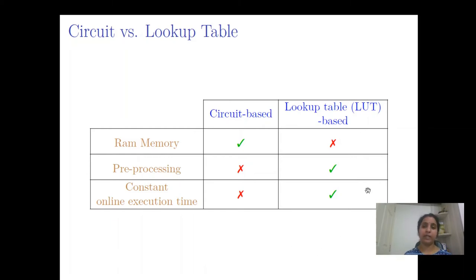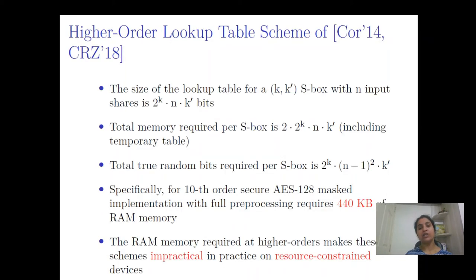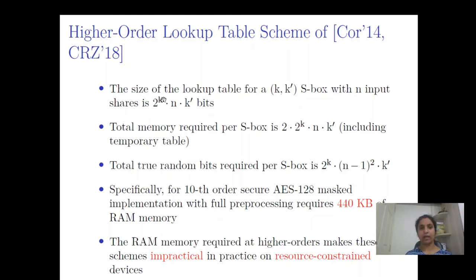The main problem with lookup table-based schemes is the amount of RAM memory required. Our goal is to optimize the RAM memory required for the lookup table-based scheme. Looking at higher order lookup table-based schemes from the literature, the scheme proposed by Coron in EuroCrypt 2014 and further optimized by Coron et al. in CHES 2018 requires exponential memory in terms of the S-box input size 2^k, and it depends on the number of shares n. Since an additional temporary table is needed to construct the randomized lookup table, the total memory required is double that quantity.